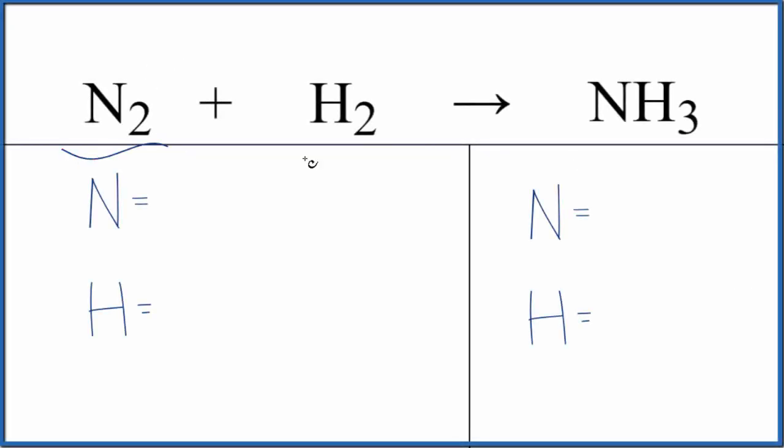Let's balance the equation for N2 plus H2 yields NH3. This is nitrogen gas plus hydrogen gas and it gives us ammonia gas. We'll also look at the type of reaction then we'll write the states.